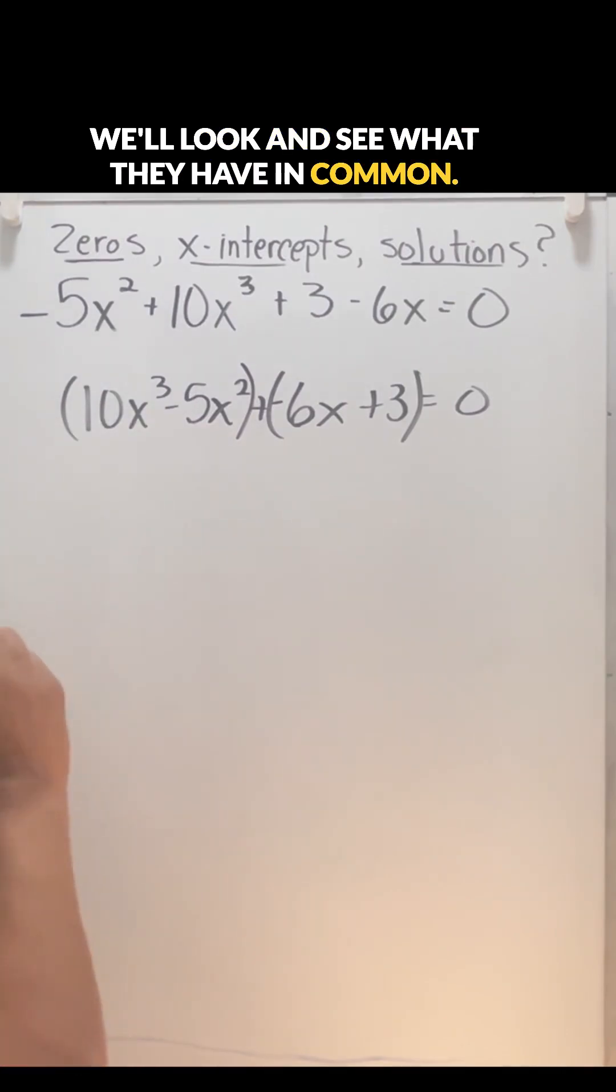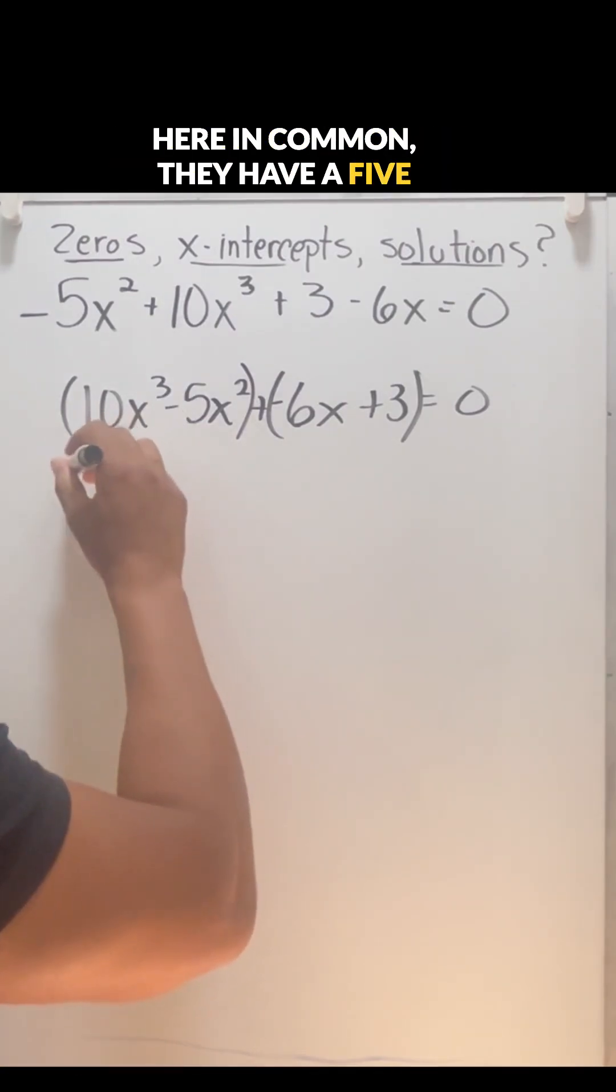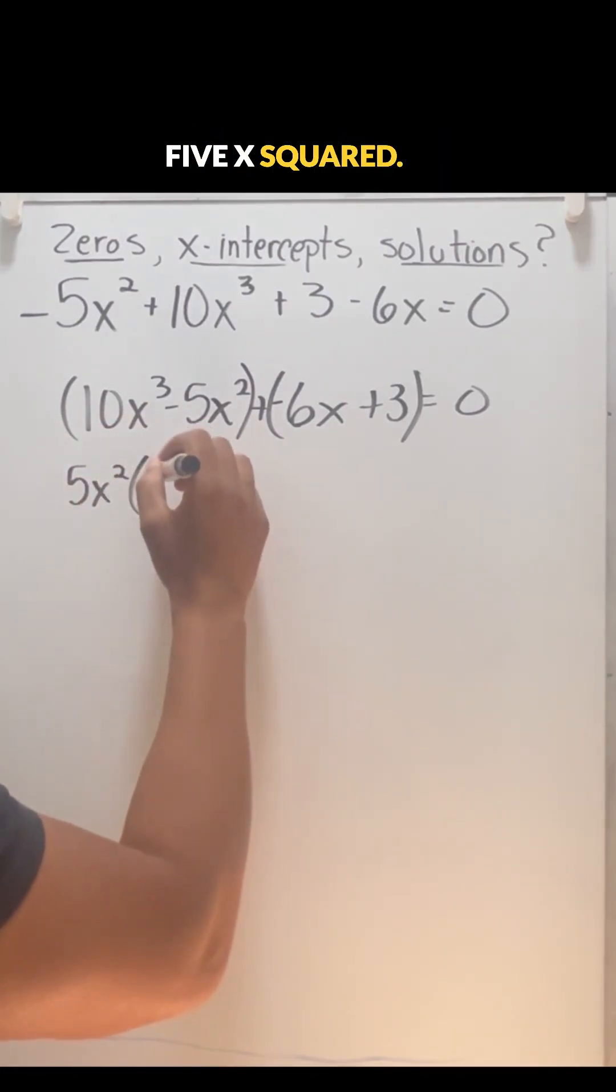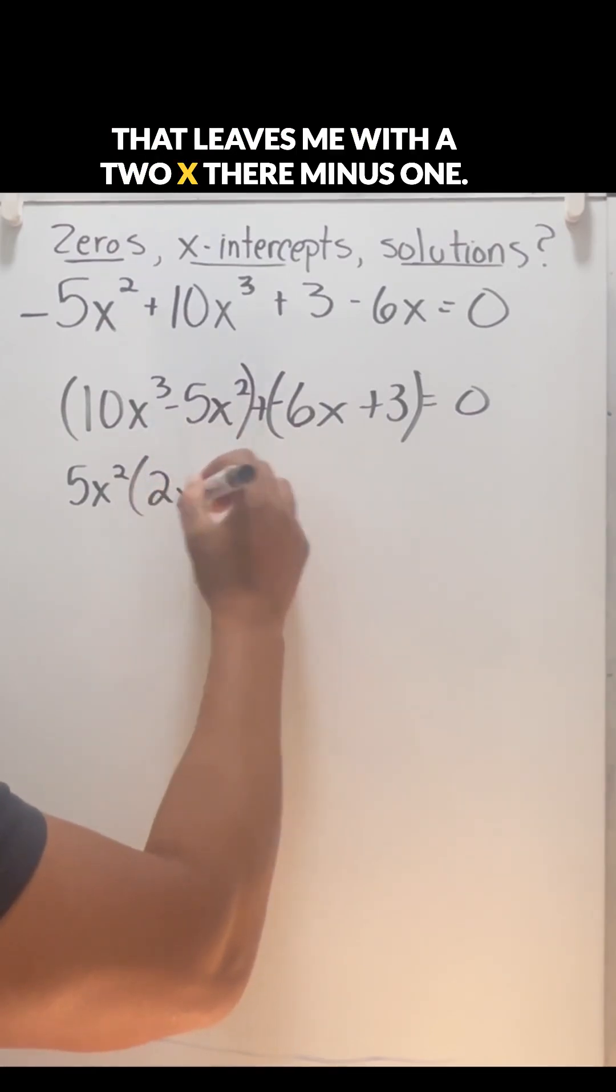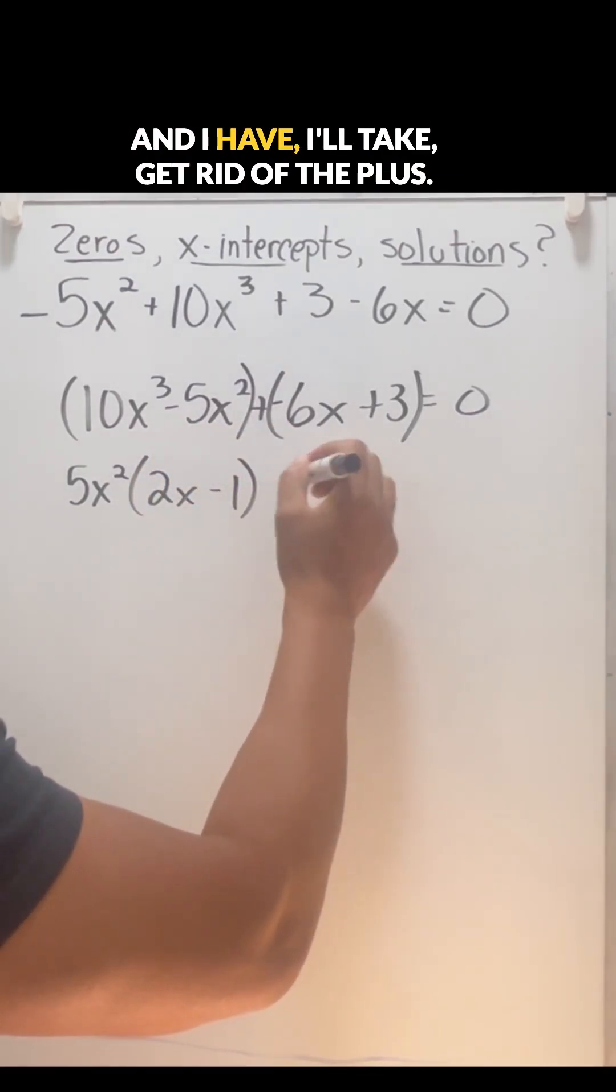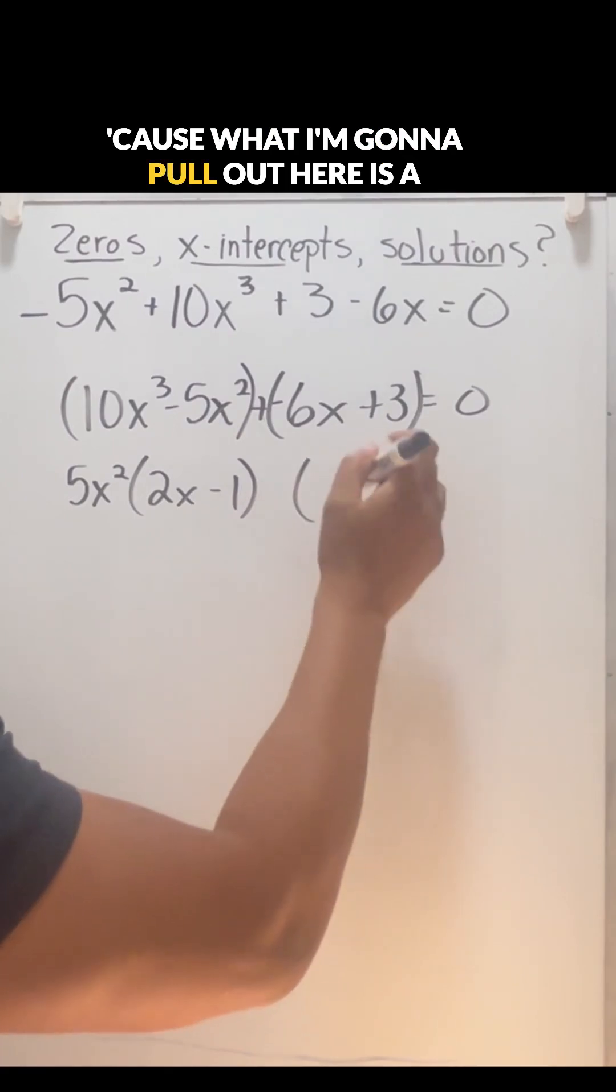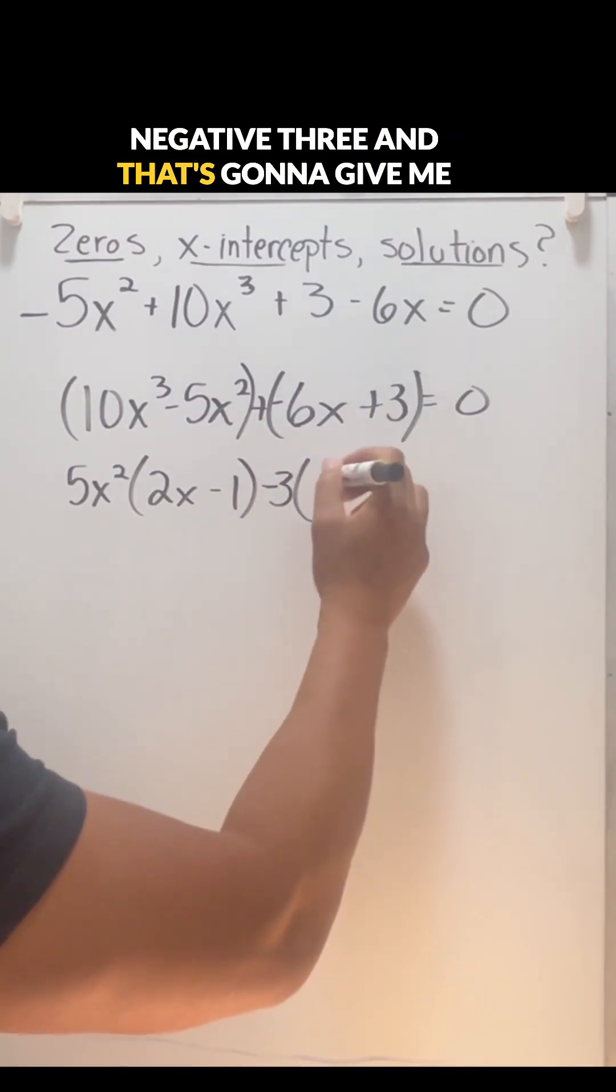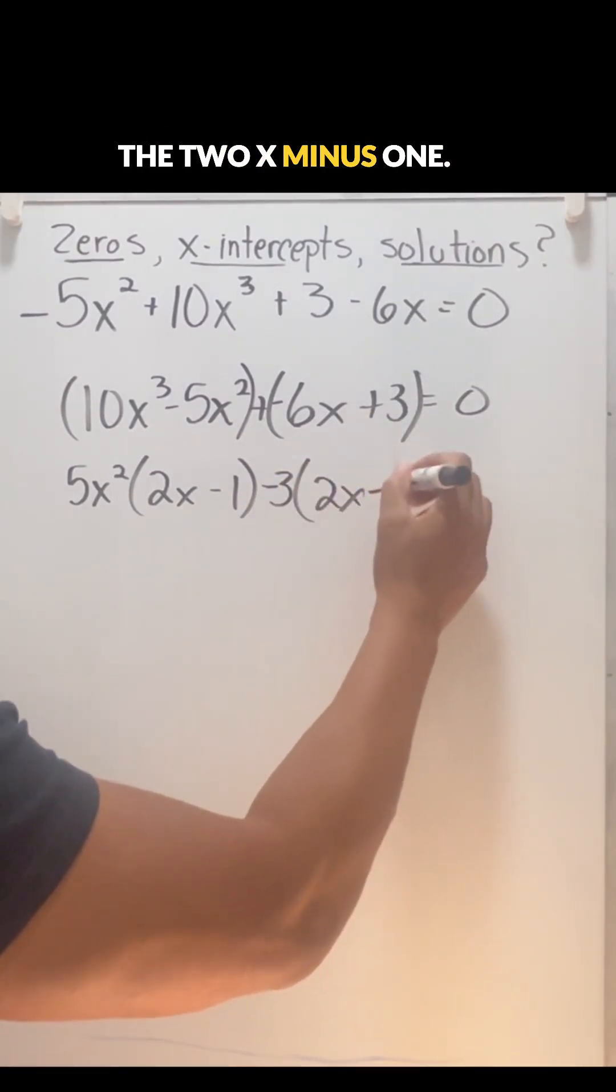Look and see what they have in common. They have five x squared, so I'm going to pull that out. Five x squared, that leaves me with two x minus one. And I'll get rid of the plus, because what I'm going to pull out here is a negative three, and that's going to give me the two x minus one.